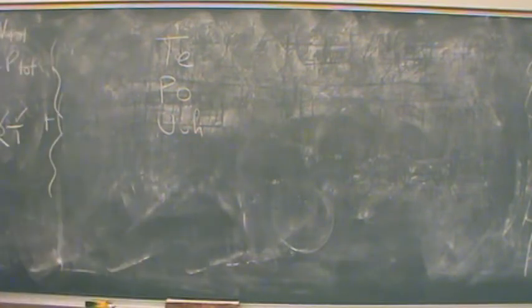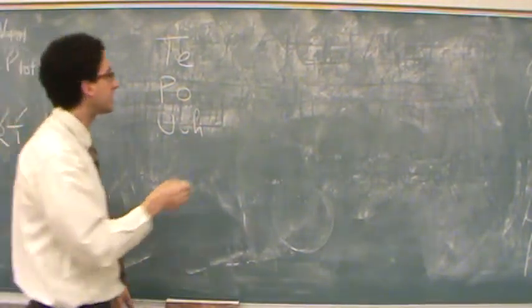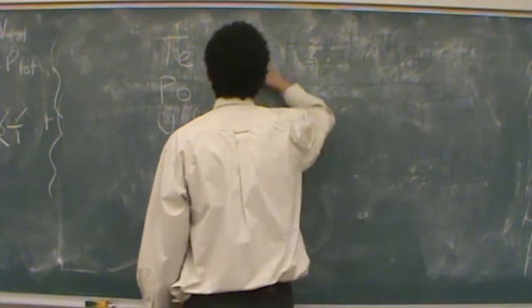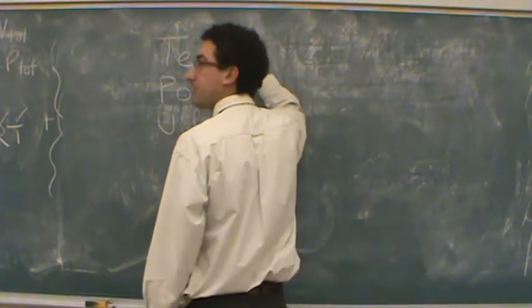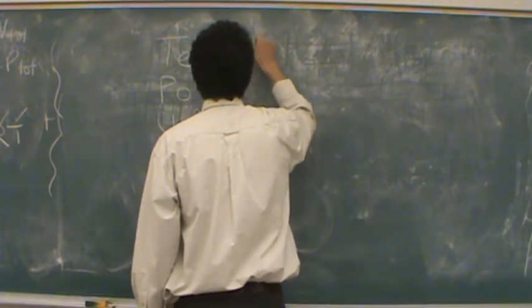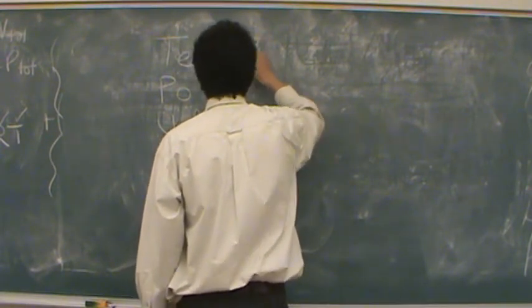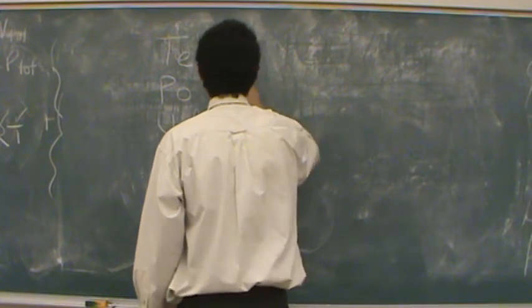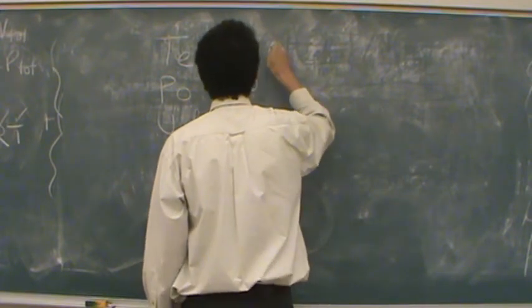I'll just make up some numbers. Let's say the radius for this first one is 1.8, and for this one is 2.0, and the units will be angstroms.